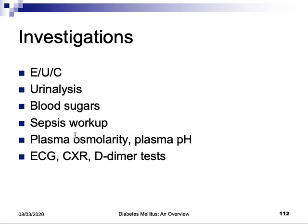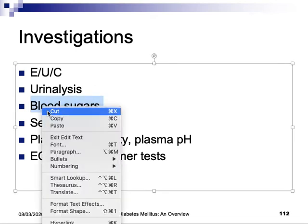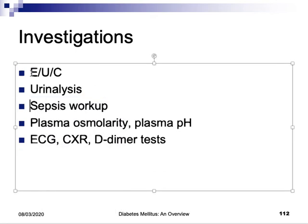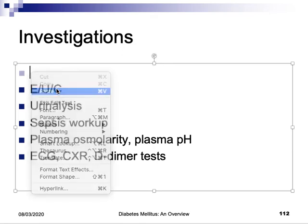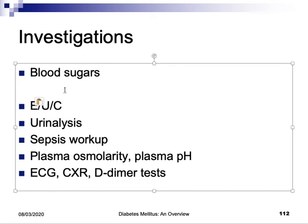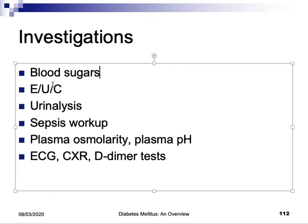HHS has an insidious onset. Patients have symptoms of polyuria, polydipsia, and weakness. Most will be severely dehydrated; being elderly they may be lethargic, confused, or in coma because serum osmolality is so high. For investigations, blood glucose levels come first — blood sugar can be extremely high, even up to 130 mmol/L.